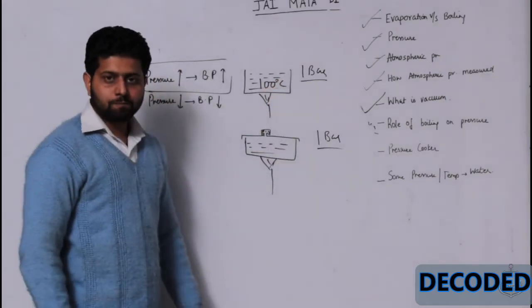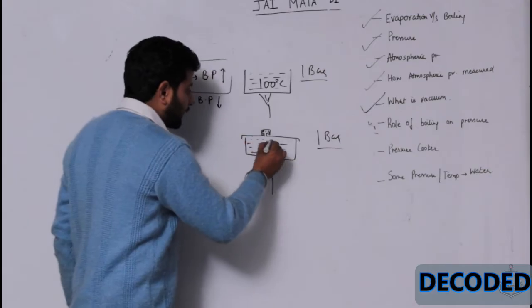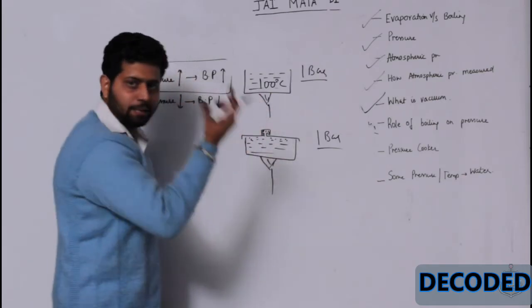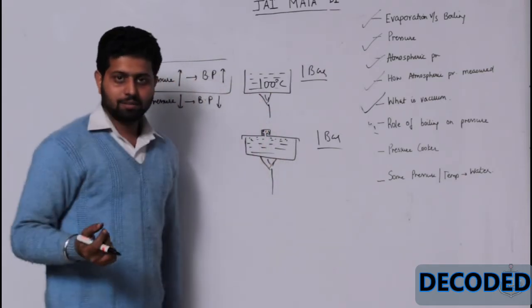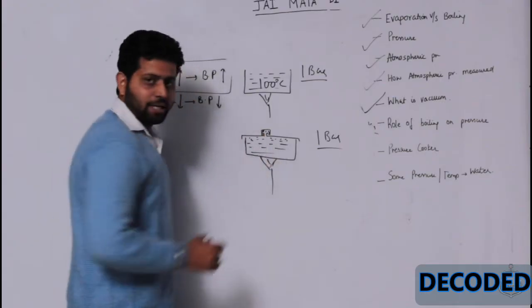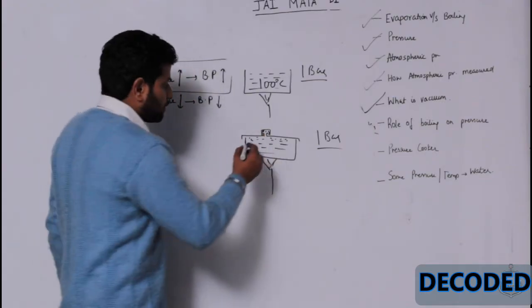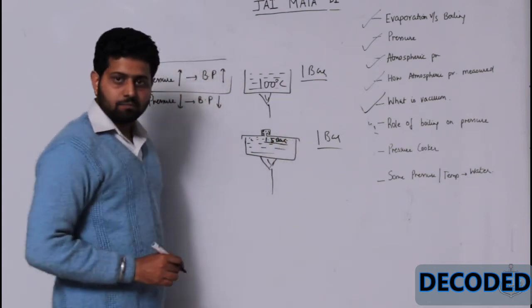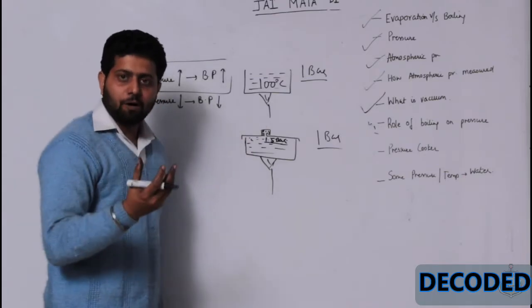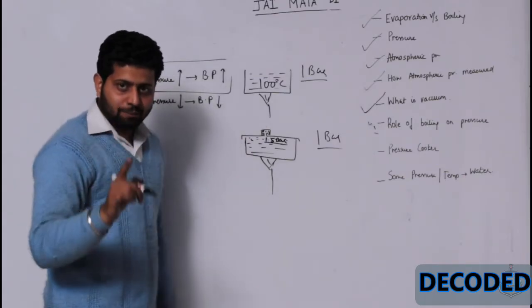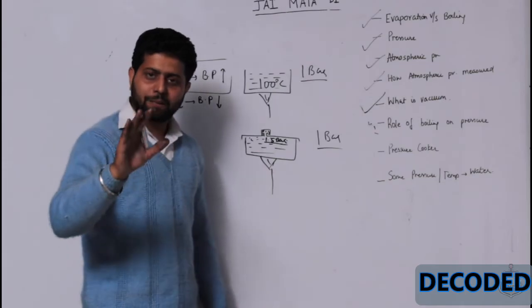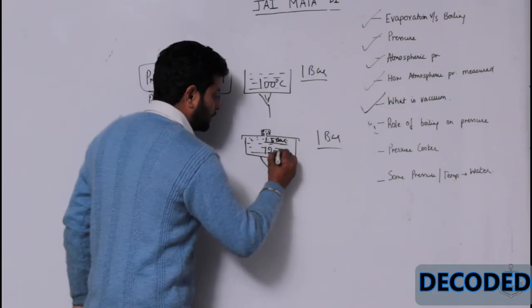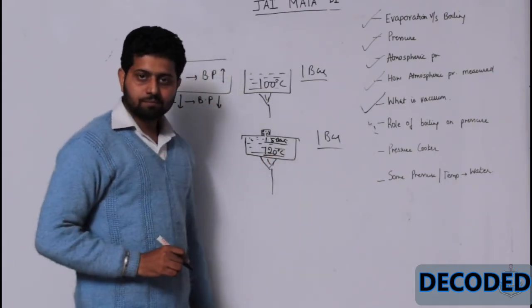But what about this pressure cooker? Till the time pressure inside increases sufficiently so much, that it is able to lift this seat up. This device to release pressure up. The pressure will be over here. Say now, at 1.5 bar pressure, this device, the safety valve I would say, lifts up. So, that means to say, in pressure cooker, approximately 1.5 bar pressure is being maintained. That means to say, boiling point over here is 120 degree centigrade.